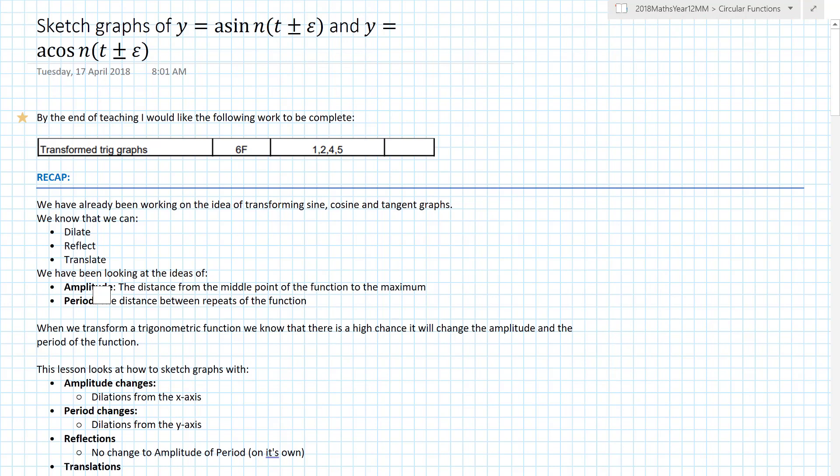Welcome to today's lesson, which is dealing with sketching the graphs of y = a·sin(n(t ± ε)) and y = a·cos(n(t ± ε)). That's a long title, but actually all it's talking about is transforming sine and cosine curves.